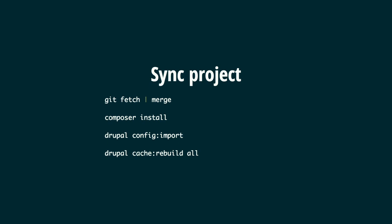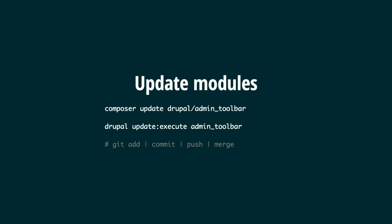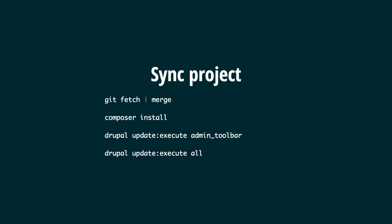Finally, run drupal config:import to get all the configuration that was exported, then clear cache with cr or cache:rebuild - the new name for the cc all command. How to update a module? If there's a security issue with a module, run Composer update and provide the module name. Sometimes when you update a module there's a pending database update or hook_update. Run the update:execute command with the module name to apply those changes to your database. Then git add, commit, push, create a pull request, someone does a code review, and merges. The rest of the team gets all those changes the same way - run Composer install.